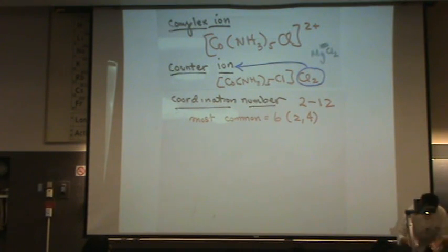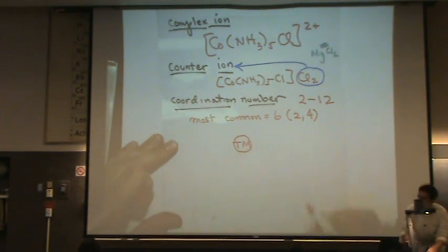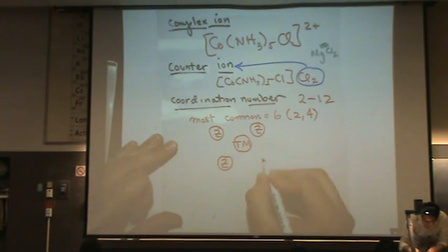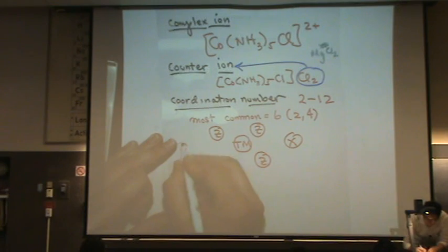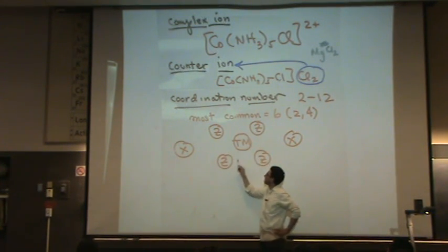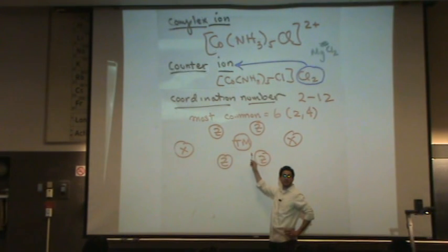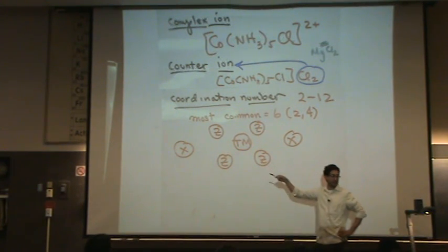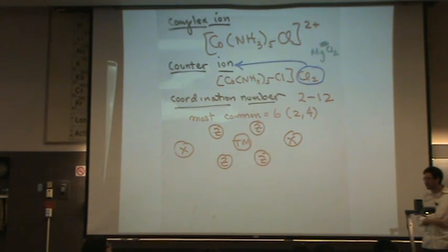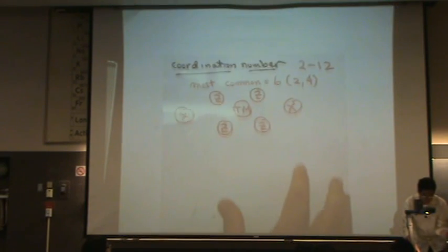For example, let's say I have a transition metal Tm right here. If I have atom Z here, here, here, and here — and atom X here and here — the coordination number for this transition metal is 4. It's the number of nearest neighbors. The X atoms are neighbors, but they're not that near. It's like living in the dorms in Davis: other dorm residents are your nearest neighbors, but I live off campus, so I'm not a nearest neighbor.